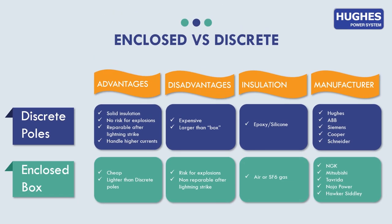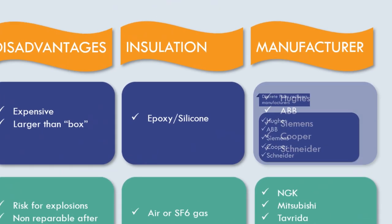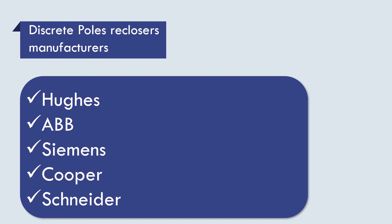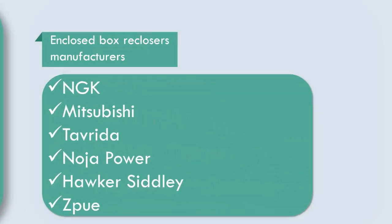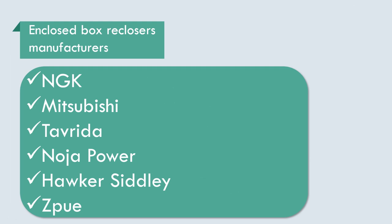And lastly, you can see the list of manufacturers which produce reclosers with discrete poles such as Hughes, ABB, Siemens, Cooper, and Schneider. And the list of manufacturers that produce reclosers with an enclosed metal box like NGK, Mitsubishi, Tavrida, Noja Power, Hawker Siddeley, and S&C.